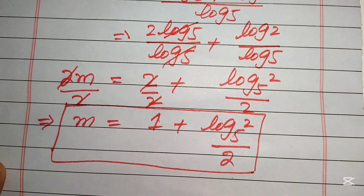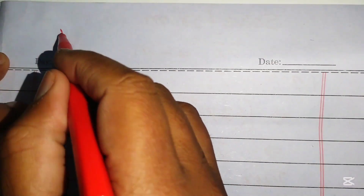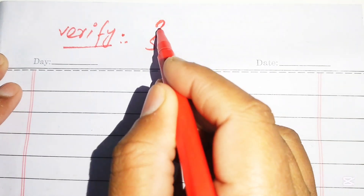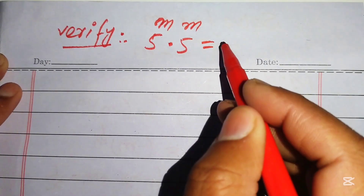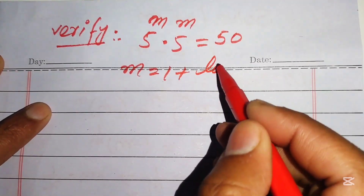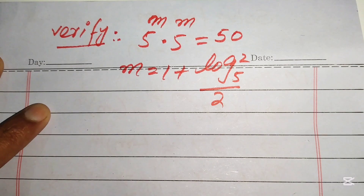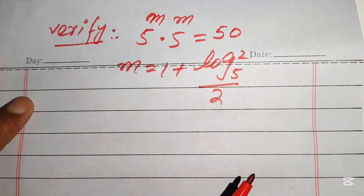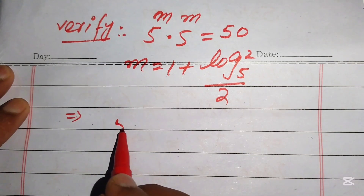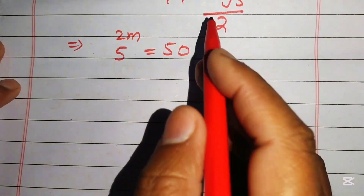This is the final value of m. Now we verify by substituting back into the original equation: 5^m times 5^m equals 50. Using the exponential law, this simplifies to 5^(2m) equals 50, and we substitute our value of m equals (1 plus log base 5 of 2) divided by 2.